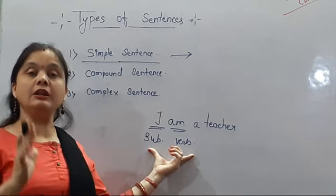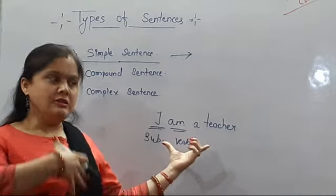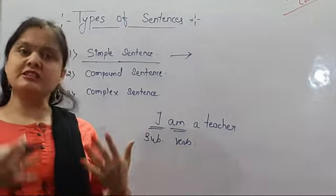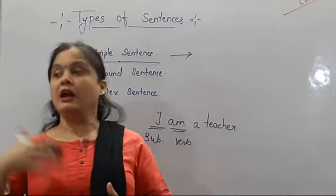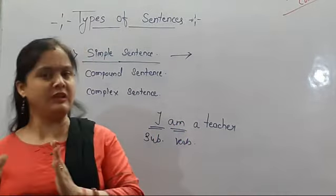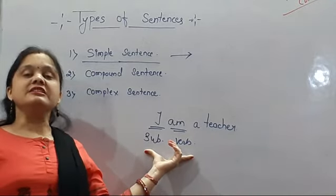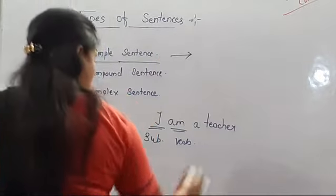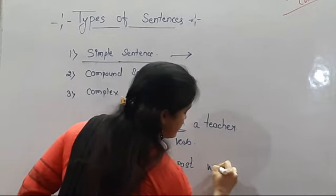This is an independent clause — we call it an independent clause. Because for this clause, we do not need any other clause. When we say 'I am a teacher,' the sentence is clear. 'I am a doctor,' 'I am a lawyer' — the meaning is clear. We have no need of another clause. That is a simple sentence.